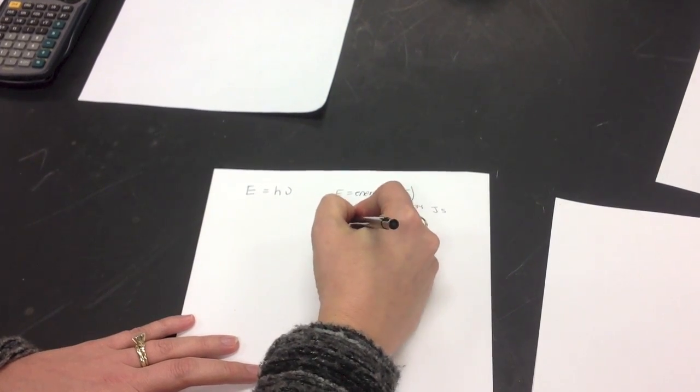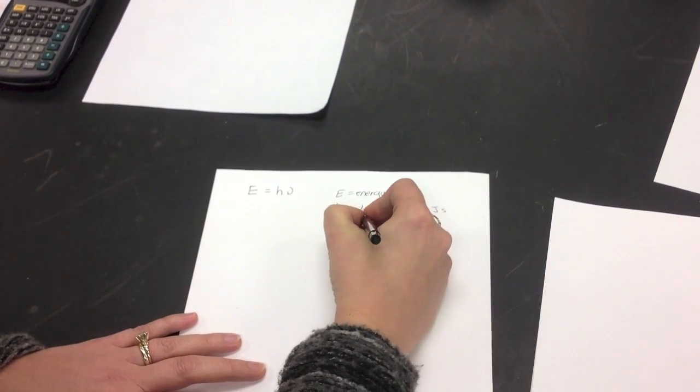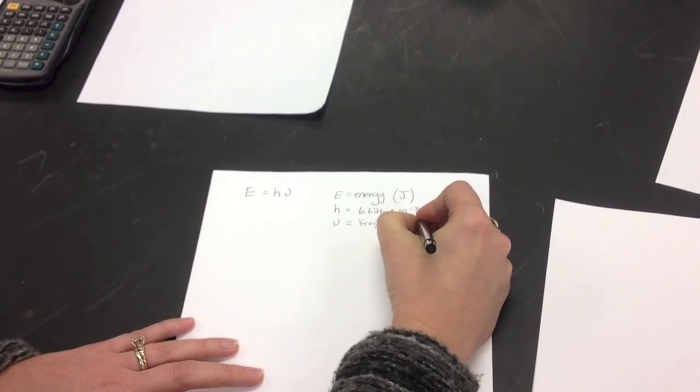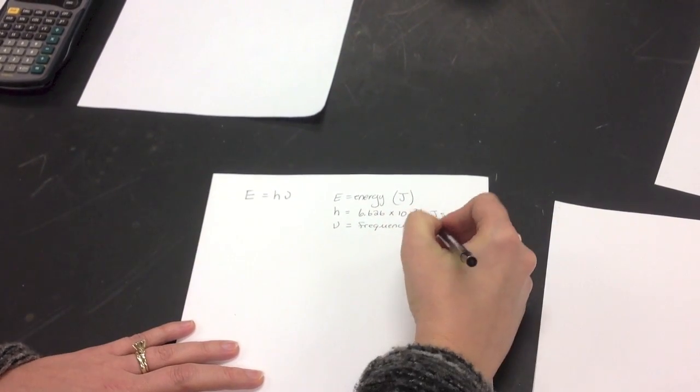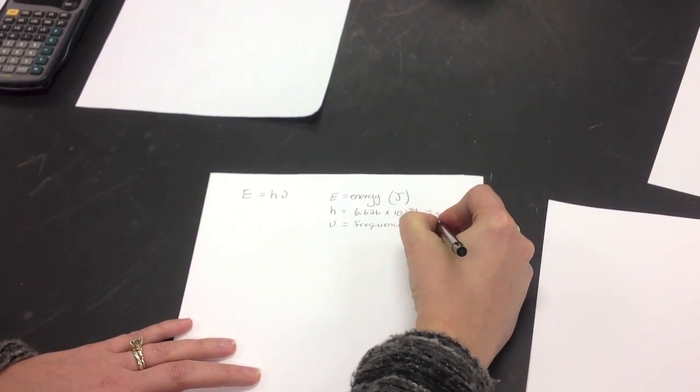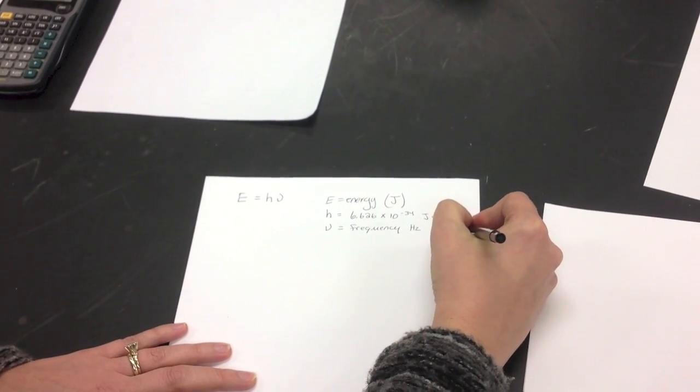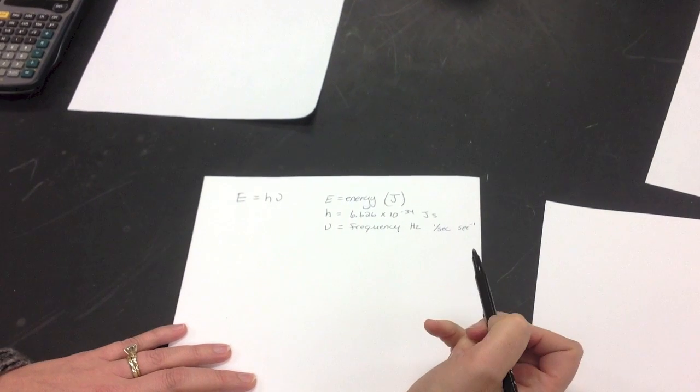And then nu is your frequency, and it has units of hertz. Now a hertz is basically 1 over seconds, and sometimes it's written like second to the minus 1. Those are all the same thing.